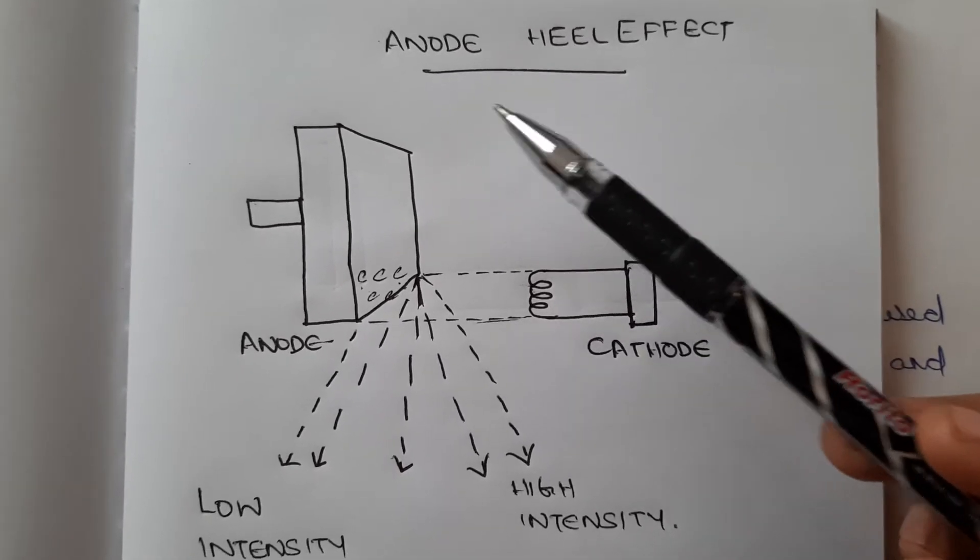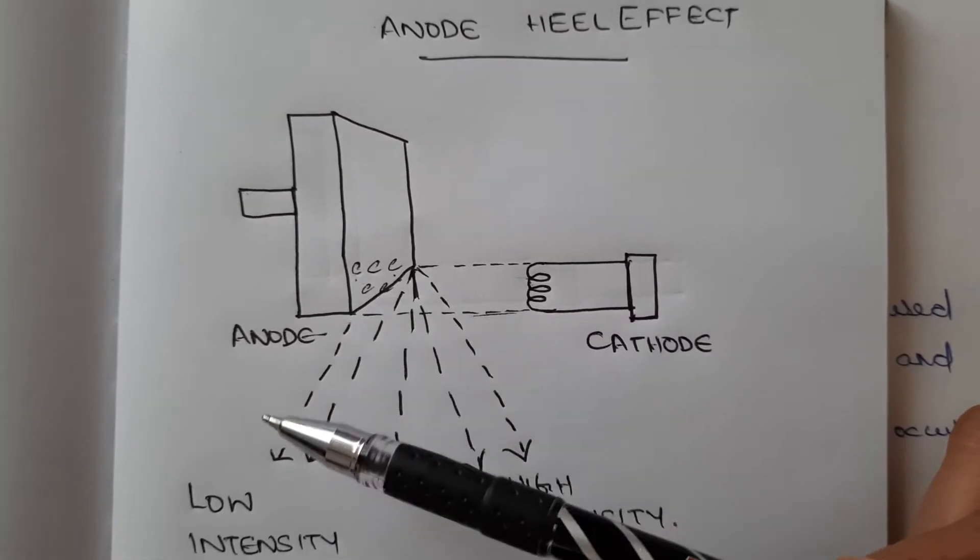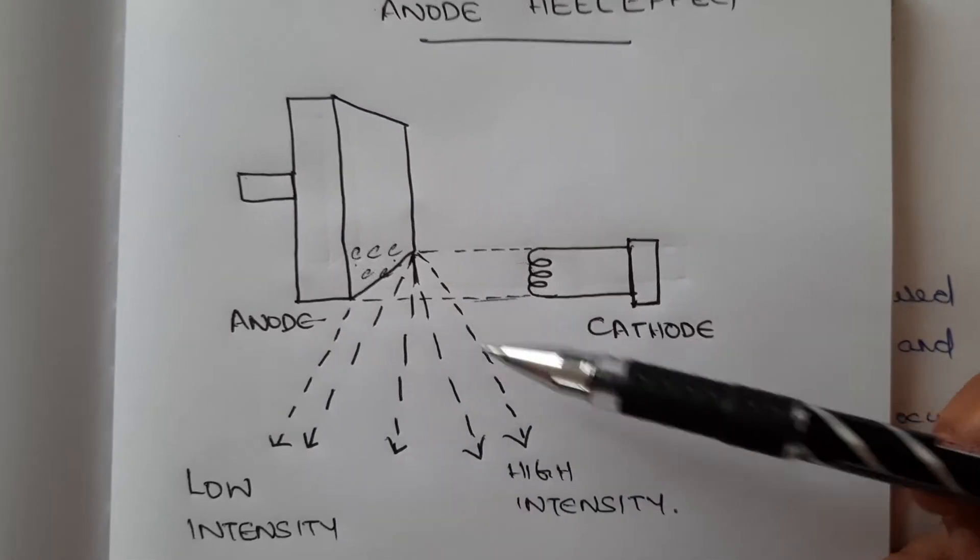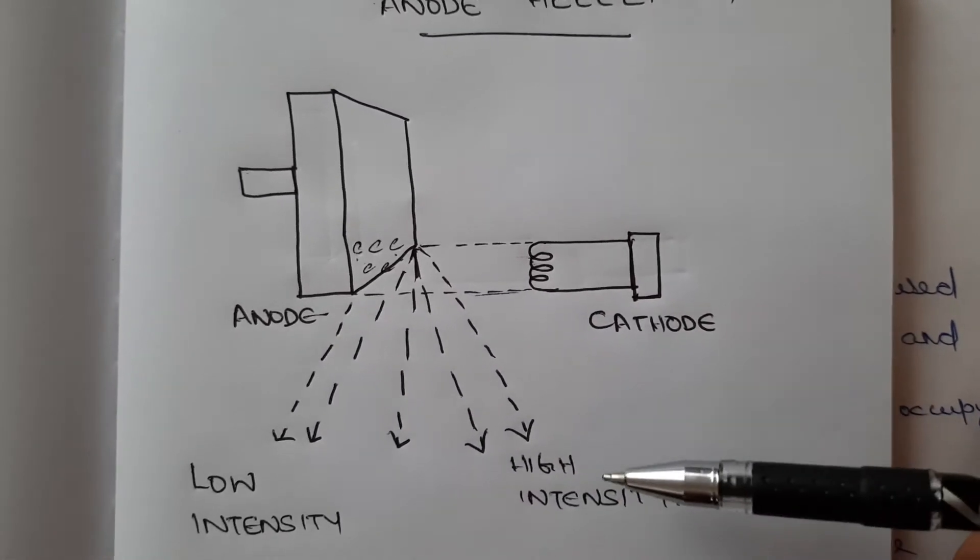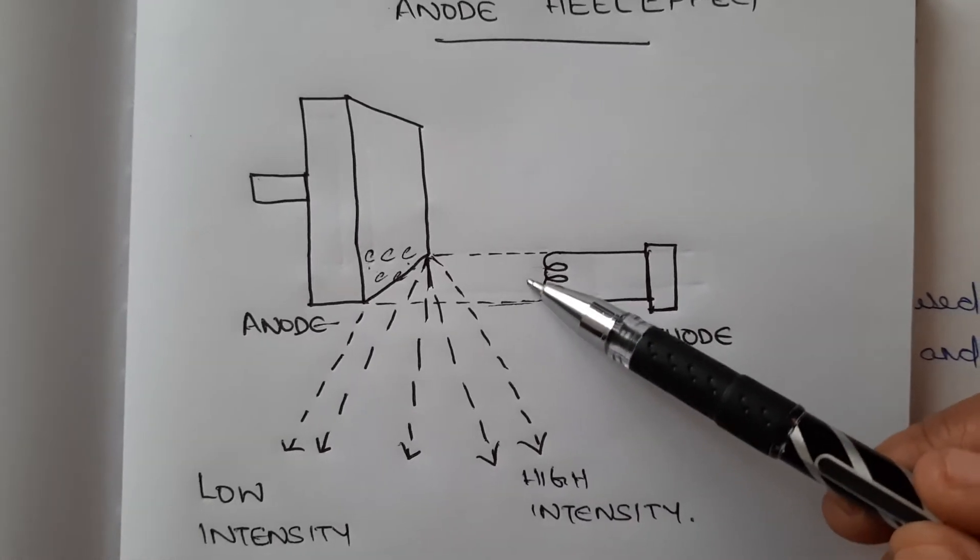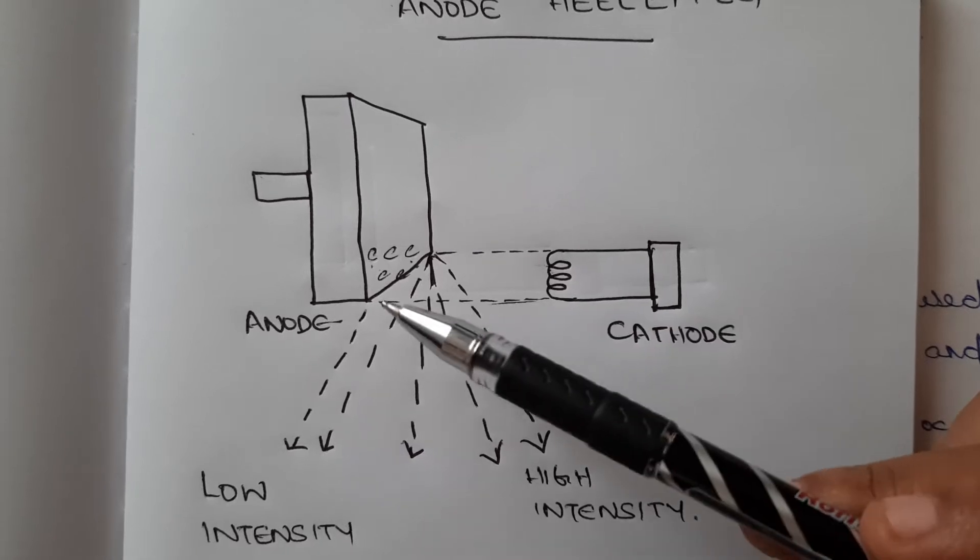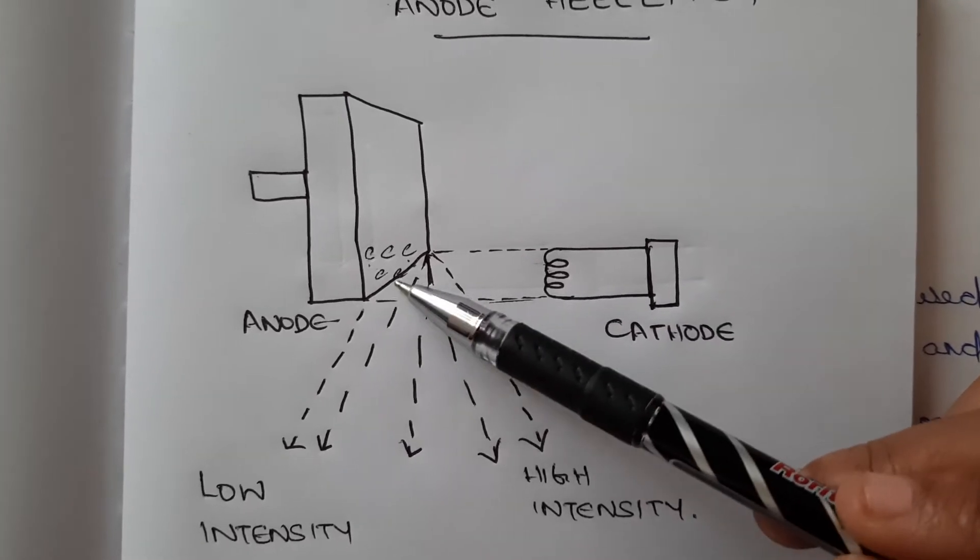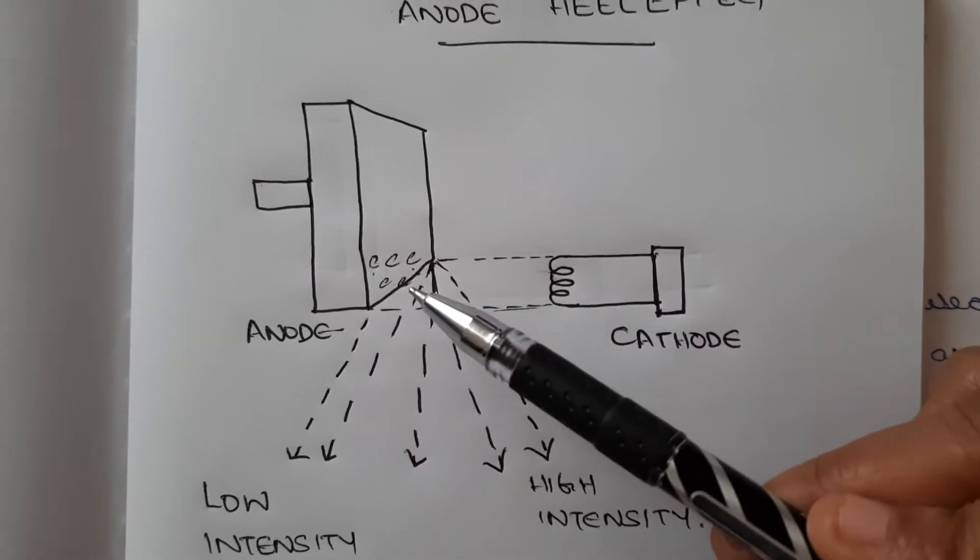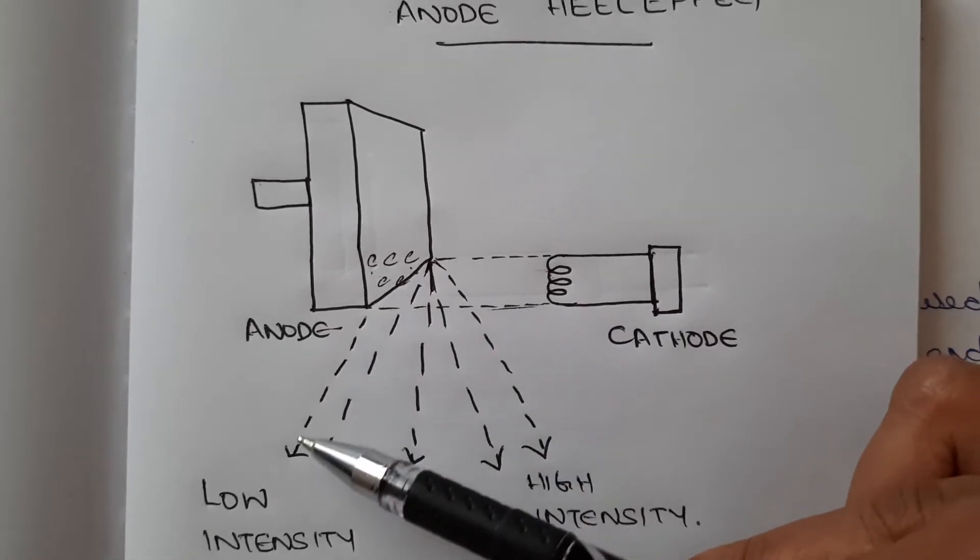As a result of the anode heel effect, the x-rays produced towards the anode end are of low intensity compared to the x-rays produced towards the cathode end. Here, the electrons from the cathode are accelerated towards the anode and get absorbed in the target area.